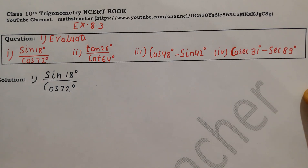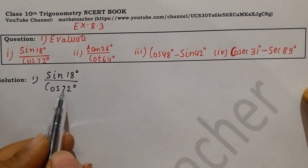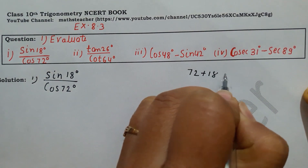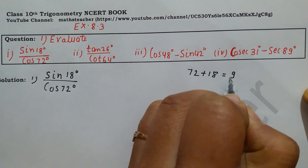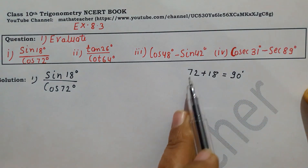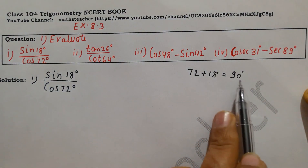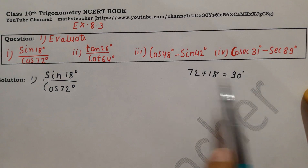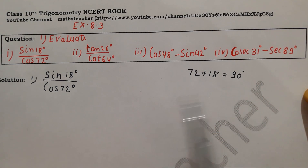In exercise 8.3, all the questions involve complementary angles. So in the first question, what do we see? 72 plus 18 — the sum of the two angles is 90 degrees. They are called complementary angles. So in this step, what do we have to do? We have to pair the two complementary angles.